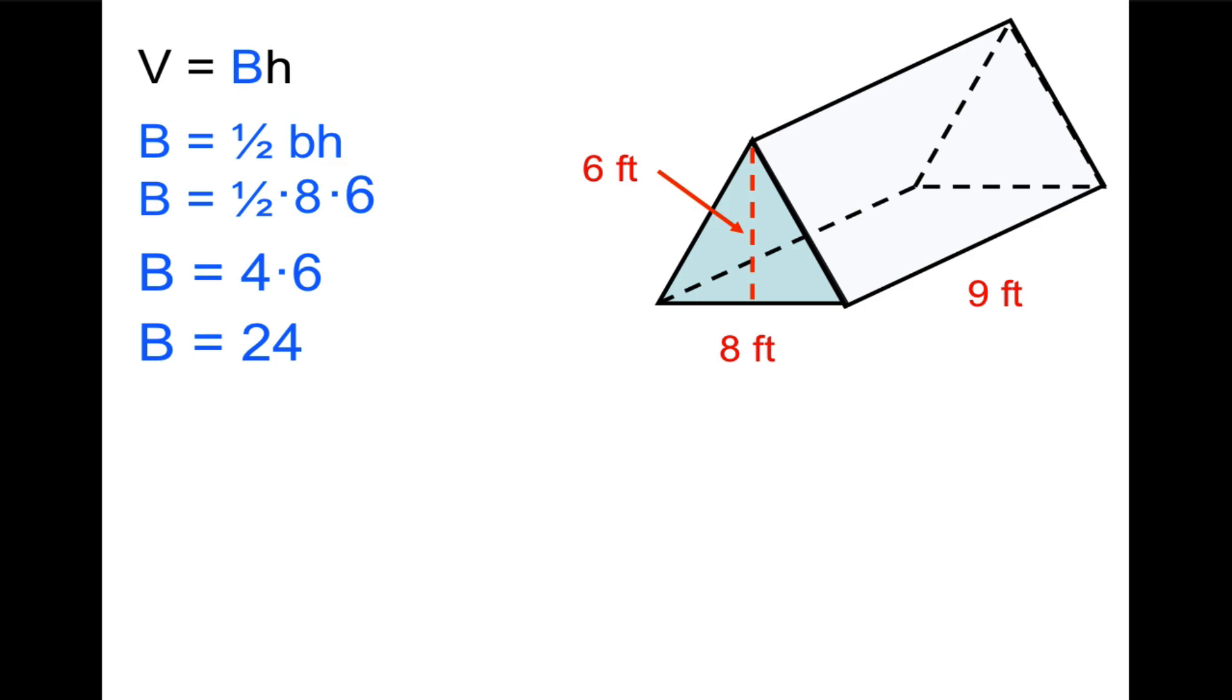We're going to plug that into our volume formula. So the volume is going to equal 24 times the height of the prism, which is 9. So we calculate 216 is the volume of this triangular prism. And that would be cubic feet.